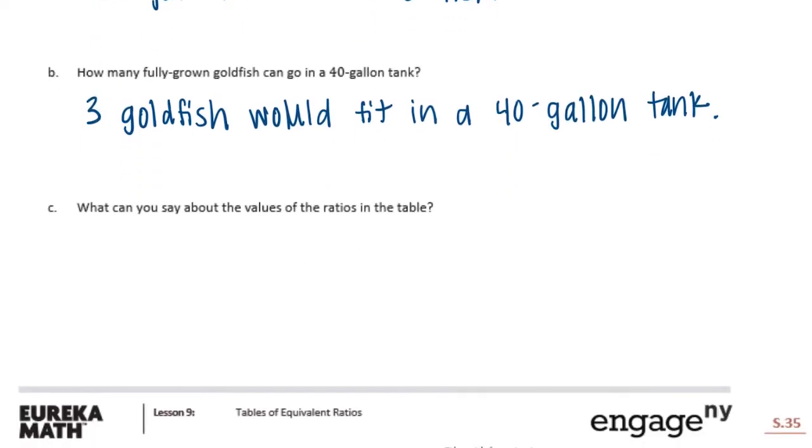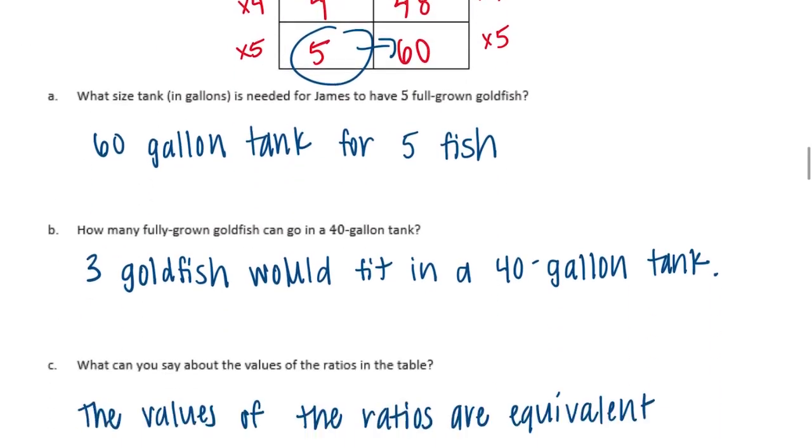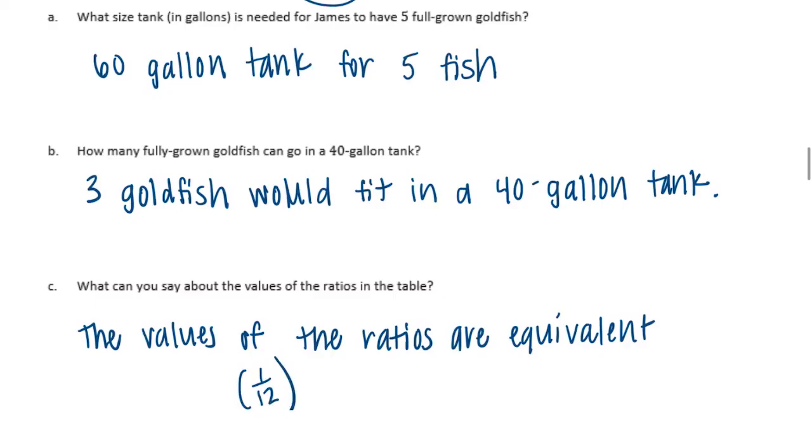And C, what can you say about the values of the ratios in the table? So just like before, we know that the values of the ratios are all the same. Or we could just say equivalent. And we want to get specific with the actual value. This is the simplest form as it can go. 1 to 12. You can say 1 to 12. That is the value of the ratio.